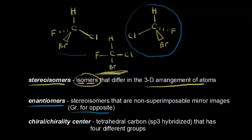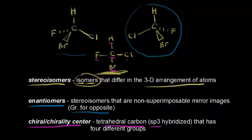Our last definition is a chiral center, also called a chirality center or stereogenic center. It is a tetrahedral carbon — sp3 hybridized — with four different groups attached to it. Looking at the carbon in this dot structure, it has a tetrahedral arrangement with four different atoms: hydrogen, fluorine, bromine, and chlorine. Anytime you have a tetrahedral carbon with four different groups, you create a chiral center. If you start with a dot structure without stereochemistry and identify one chiral center, you know there are possible stereoisomers to consider.